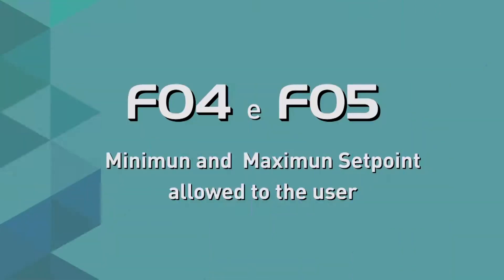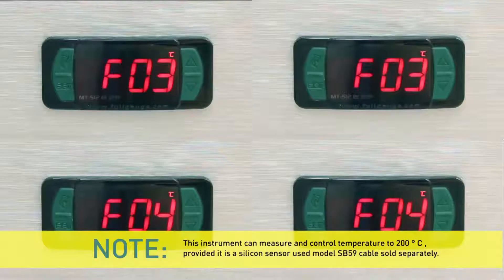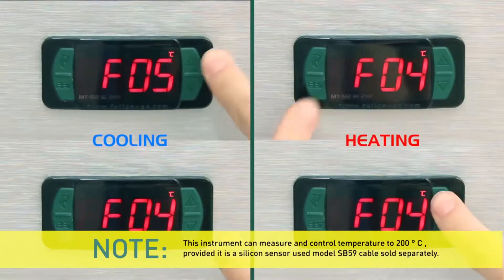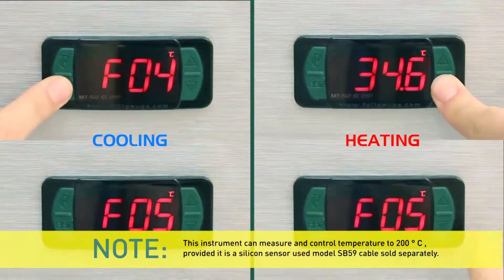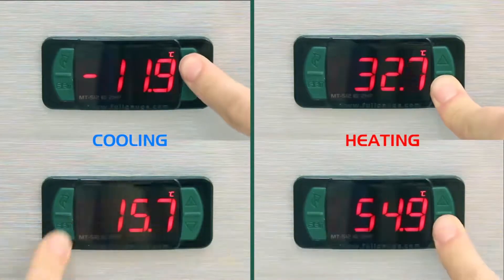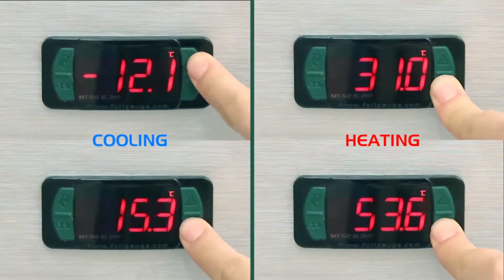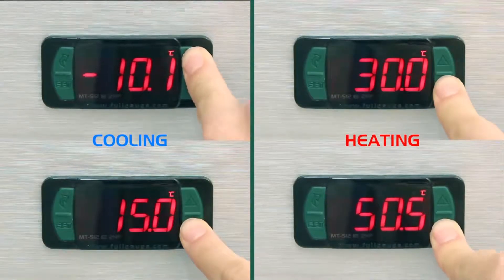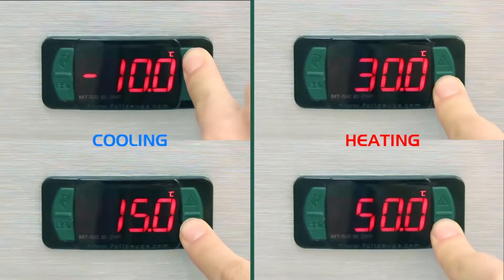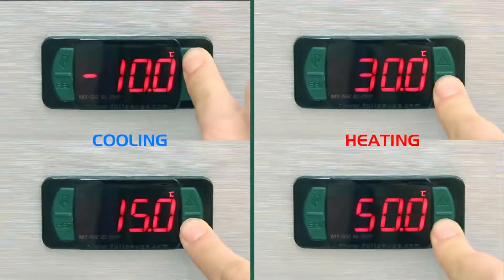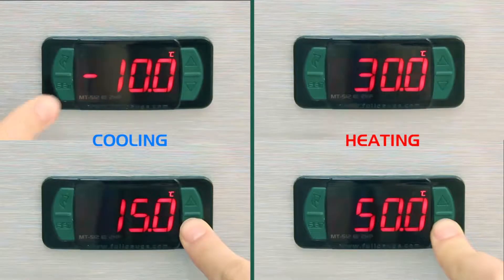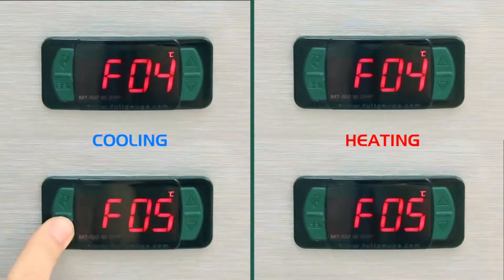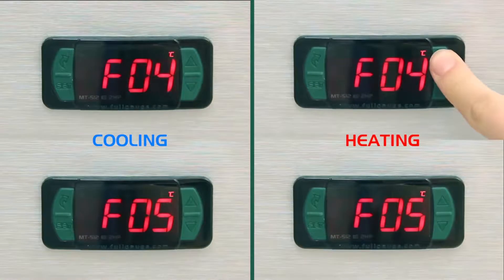F04 and F05 - Minimum and maximum set point allowed to user: The MT512E 2HP controller can control temperatures within a range of minus 50 to 105 degrees Celsius. In the examples, we limit this range to minus 10 to plus 15 degrees Celsius in cooling and 30 to 50 degrees Celsius in heating. These limits, or electronic stops, restrict the range released to adjust the set point, seeking protection and security.